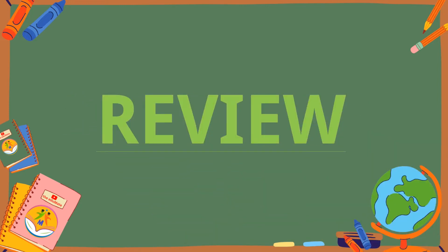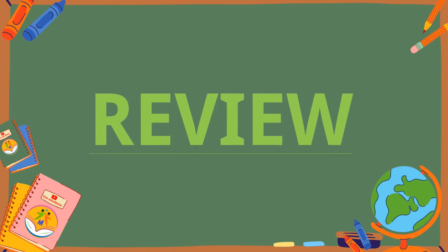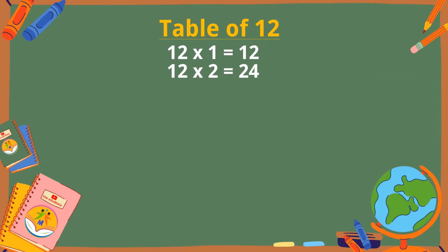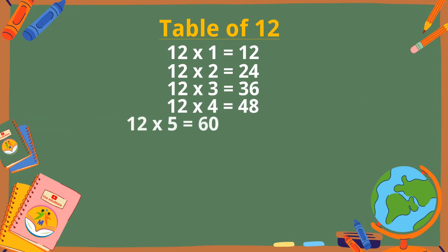Let's revise the table of 12. 12 ones are 12. 12 twos are 24. 12 threes are 36. 12 fours are 48. 12 fives are 60.